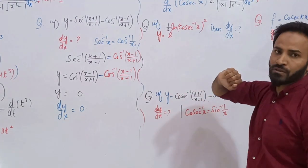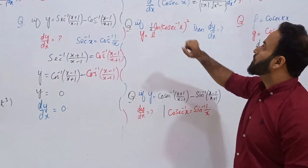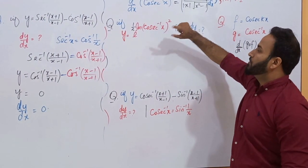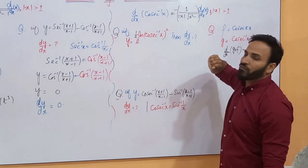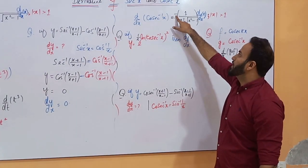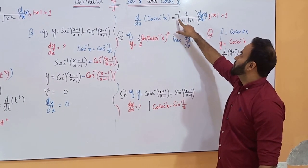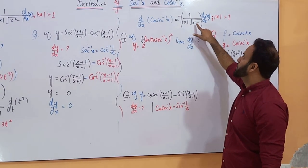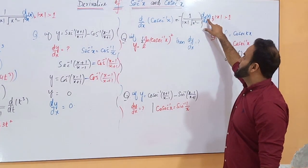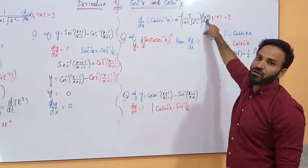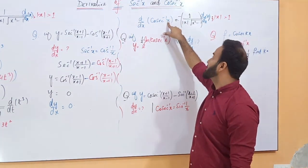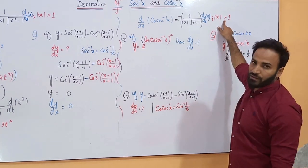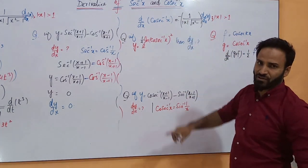How can you find out the derivative of cosecant inverse x? The derivative of cosecant inverse x is equal to minus 1 over absolute x times square root of x squared minus 1, times the derivative of what is inside the cosecant inverse. Here x is the argument and absolute x must be greater than 1. This is the constraint on x.